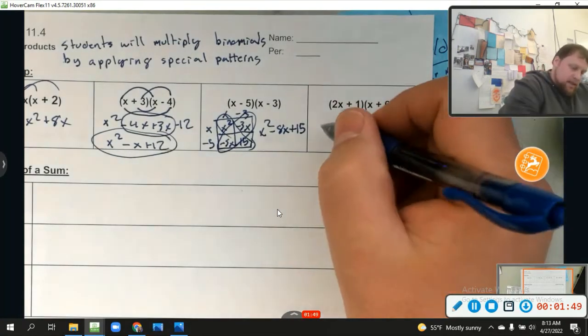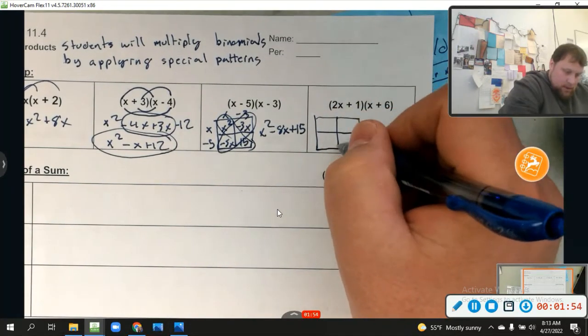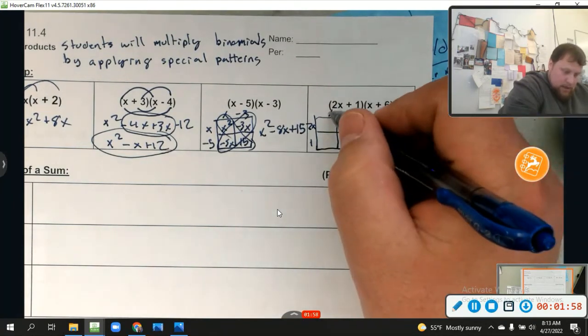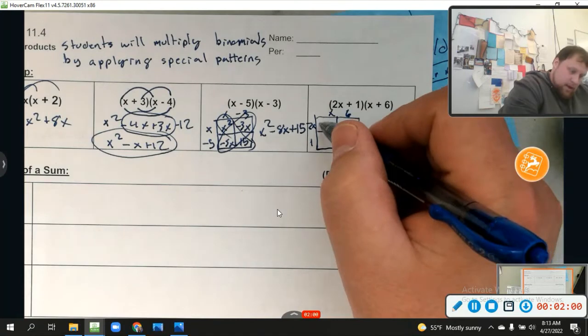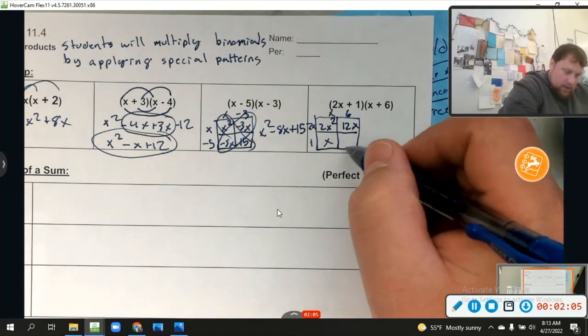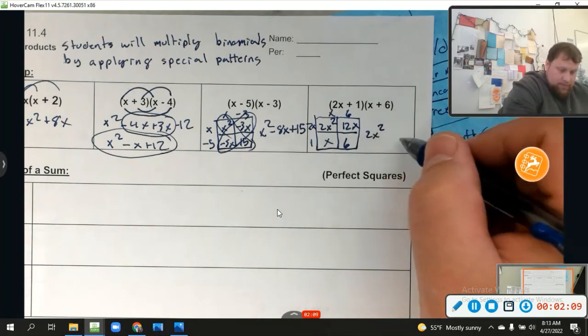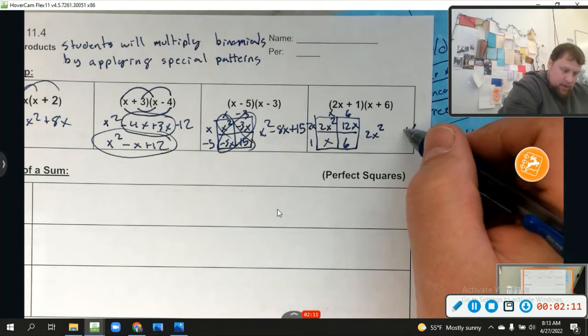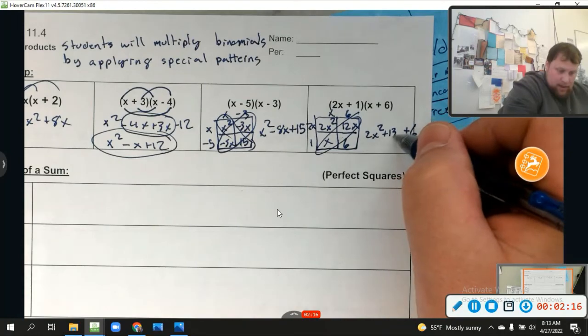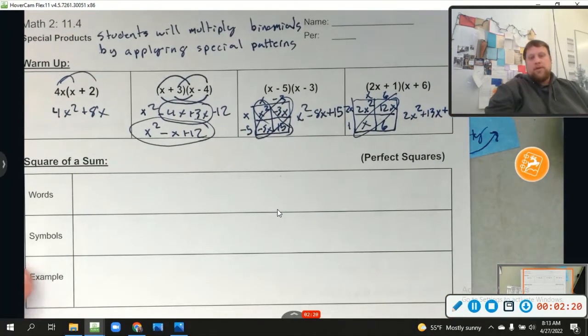Last but not least, let's go ahead and do another generic rectangle because I want to. This is 2x and 1 and x and 6. So I'm going to have 2x squared, x, 12x, and 6, which is going to end up being 2x squared. Got my 6 over here, positive 6. Then x plus 12x is plus 13x. Yes.